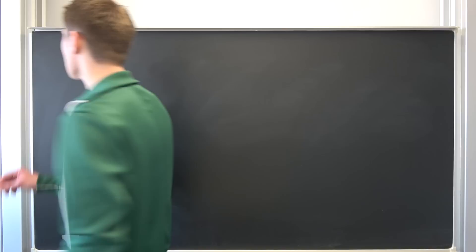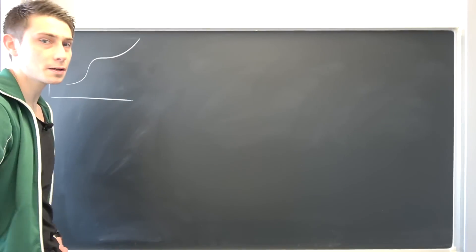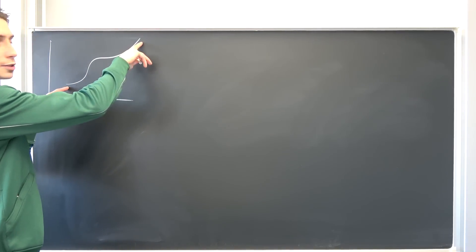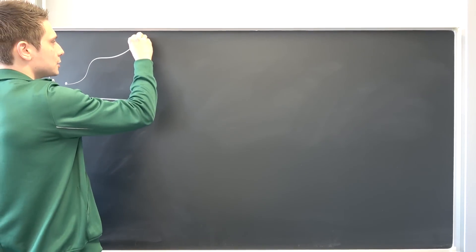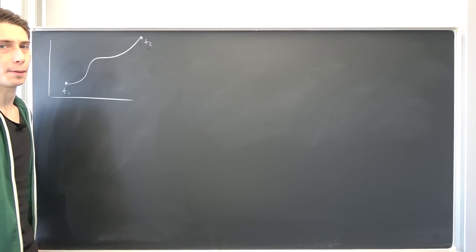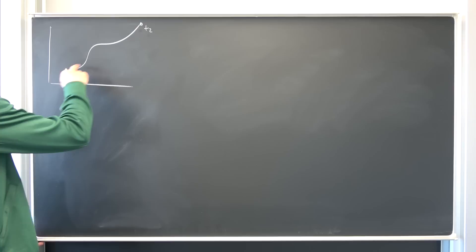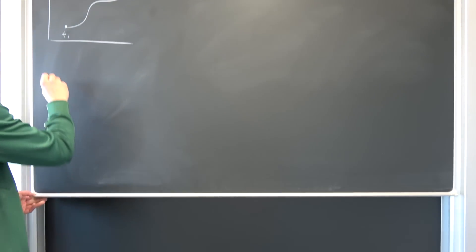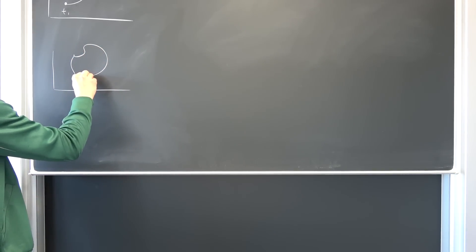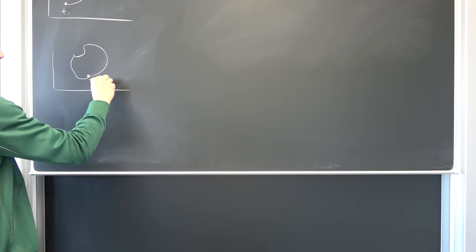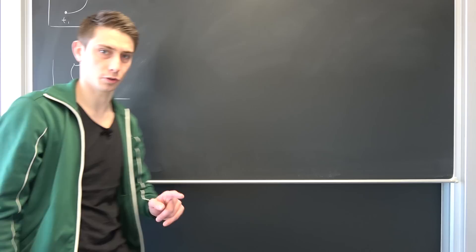We want to take a look at a little curve. So let's say we have some curve right here and it's bounded between two endpoints. T1 is our lower bound and T2, for example, is our upper bound. What would happen if T1 and T2 are at the same spot, meaning we have something like this right here? Then that's what you call a contour, and in the end we are going to end up with a contour integral.